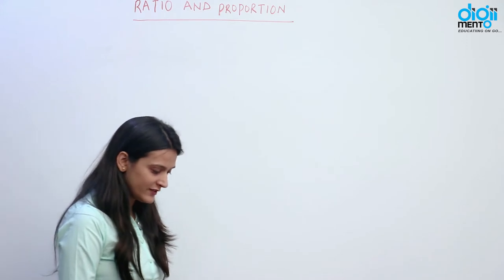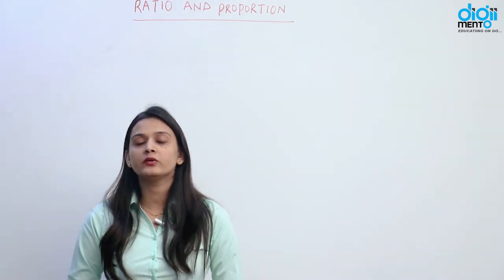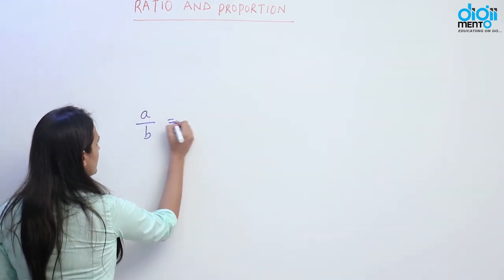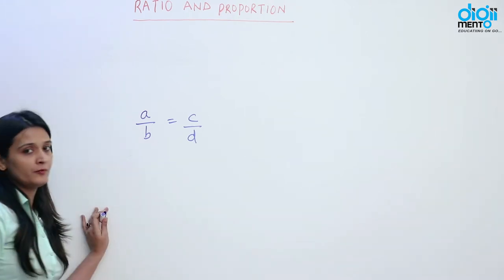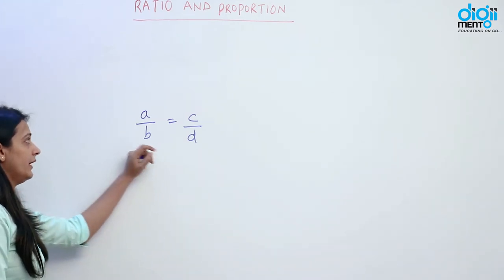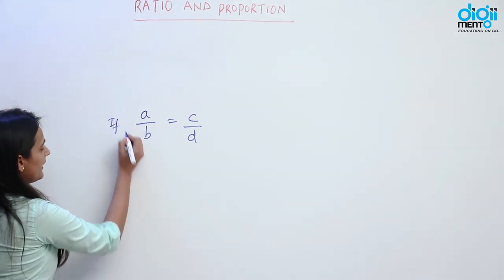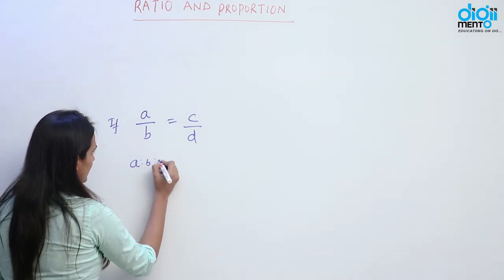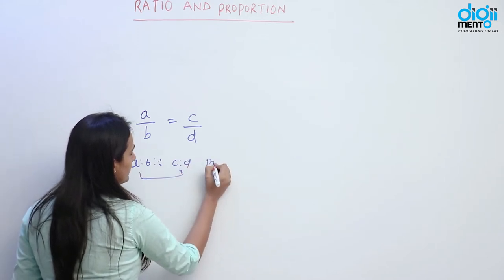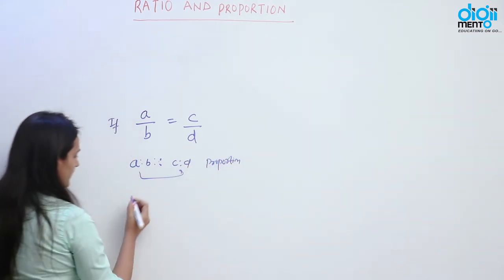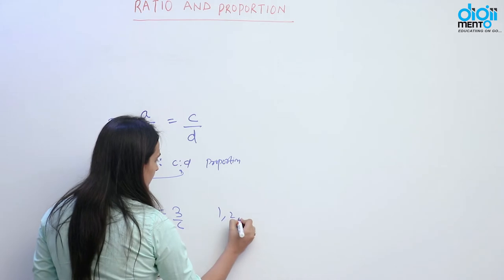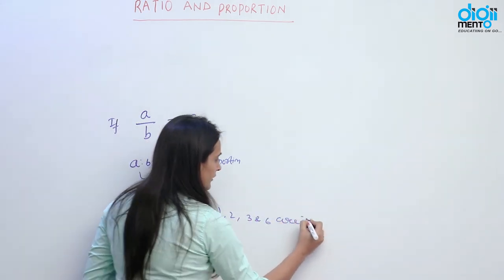Now we will talk about proportion. What is proportion? The equality between the ratios is known as proportion. Suppose if we have A by B equal to C by D, we can say the two ratios have equality — we can say proportion. If A by B is equal to C by D, that means A ratio B and C ratio D are in proportion. For example, if we have 1 by 2 equal to 3 by 6, that means 1, 2, 3 and 6 are in proportion.